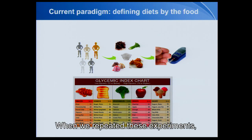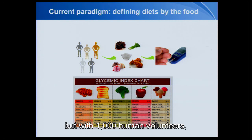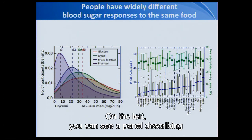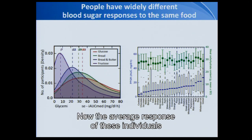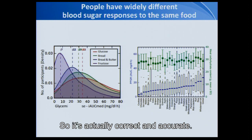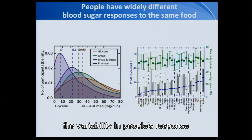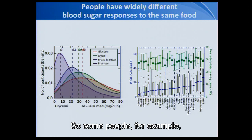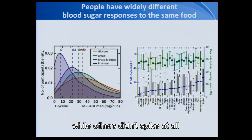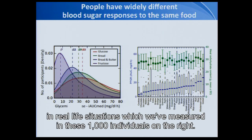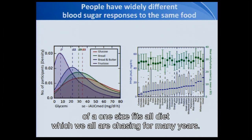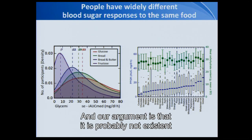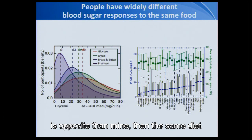Here comes the big problem. When we repeated these experiments not with 10 human volunteers but with 1,000 human volunteers, we got the following surprising results. On the left, you can see a panel describing 1,000 volunteers to which we gave an identical piece of food and measured blood sugar levels. The average response of these individuals to any food was exactly the glycemic index of that food — so it's actually correct and accurate. However, when we looked at the individualized level, the variability in people's response when given the same exact food was unbelievably high. Some people that got 50 grams of glucose spiked to diabetic levels, while others didn't spike at all. This was true for any test food provided, and for hundreds of different foods in real-life situations. This variability already questions the paradigm of a one-size-fits-all diet — if your response to a given food is opposite to mine, then the same diet cannot be good for both of us.